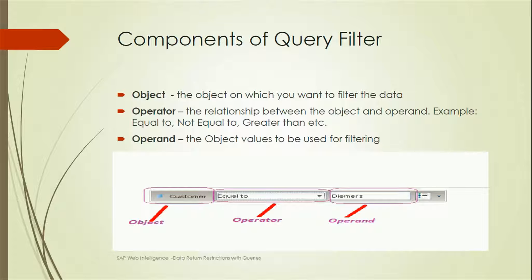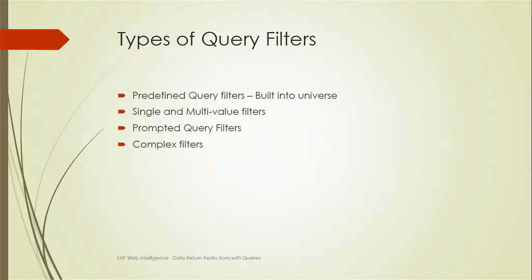What are the components of query filters? There are three key components: object, operator, and operand. The object is what we want to filter on. The operator defines the relationship between the object and operand — examples include equal to, not equal to, greater than, greater than or equal to, etc. The operand is the actual value used for filtering. For example: object = Country, operator = Equal To, operand = US.